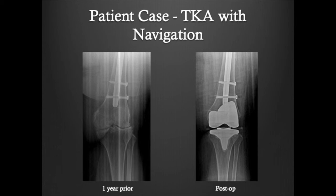This is a case of a complicated knee replacement which required the use of computer navigation. This patient had a prior femoral fracture resulting in an intramedullary nail. Standard total knee replacement technique could not be used, so we used computer-navigated total knee replacement to place the knee replacement in the anatomic position. This patient has done well post-operatively and is now pain-free.